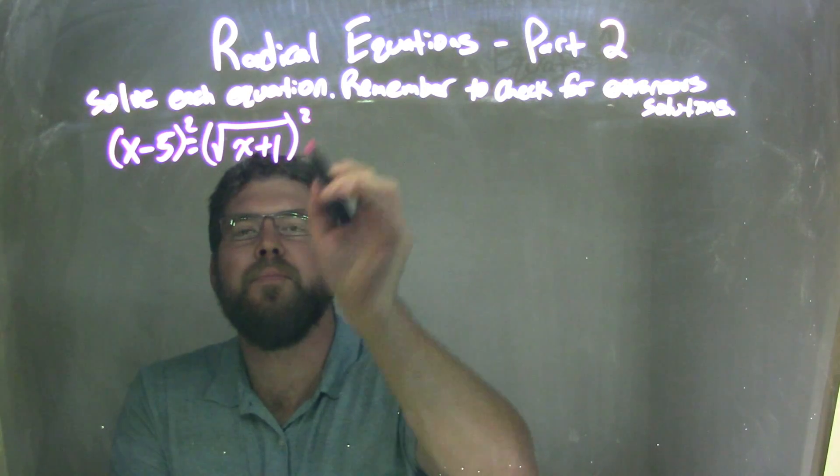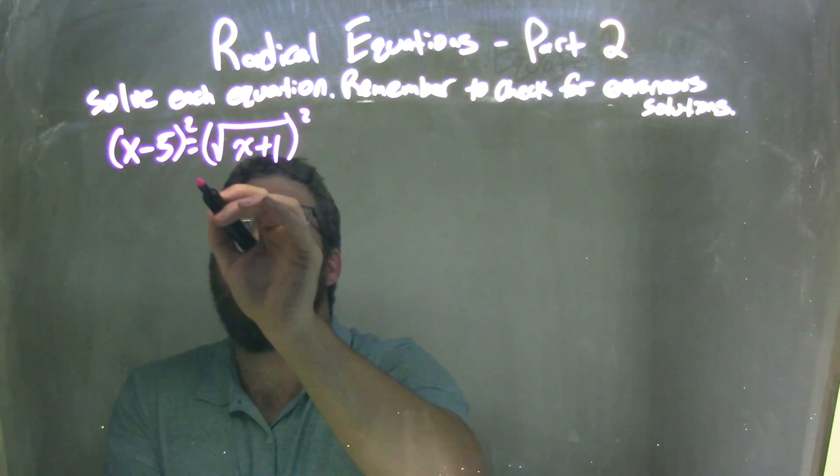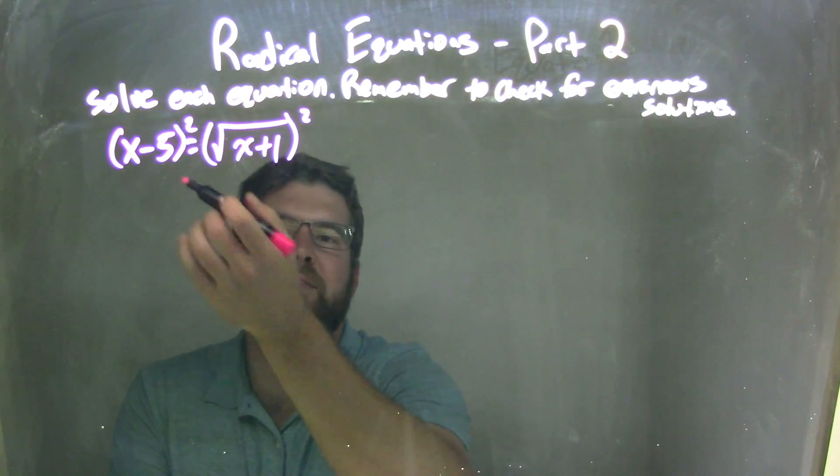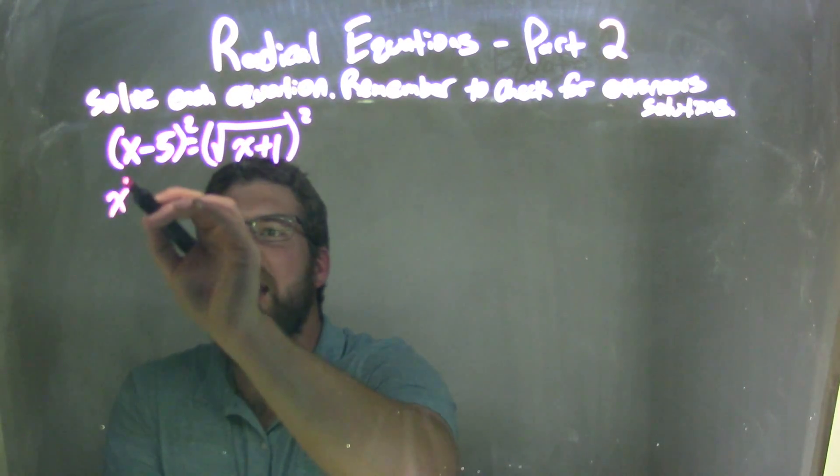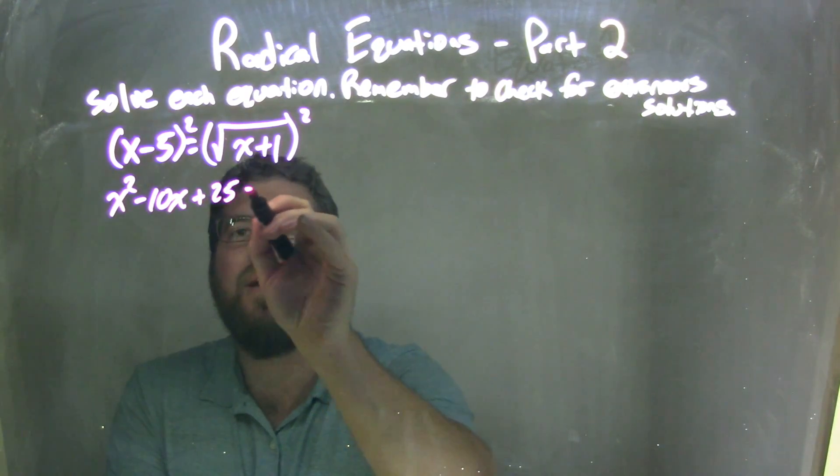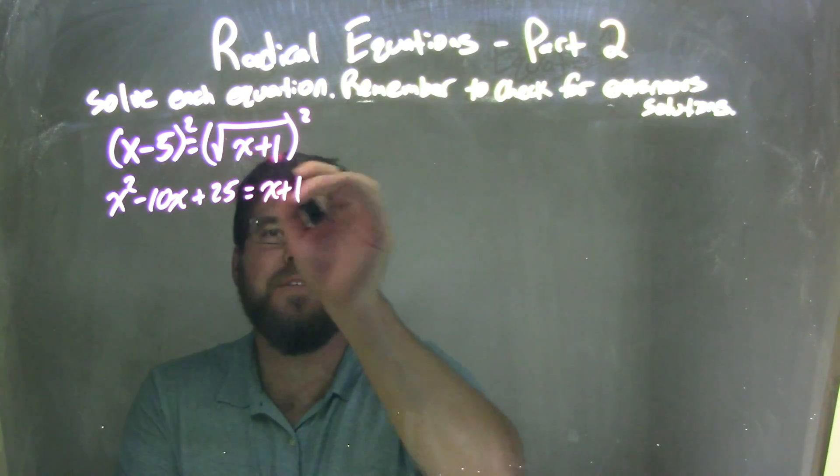Square both sides here. By squaring both sides, on the left-hand side, I need to multiply that out. That's x minus 5 times x minus 5. That comes out to be x squared minus 10x plus 25 equals x plus 1.